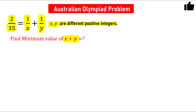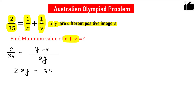How will you solve this problem? Generally these kinds of problems are solved by factorization, so let us use factorization here. We have 2/35 equal to (x+y)/(xy). Cross multiplying gives 2xy equals 35 times x plus y, or 2xy equals 35x plus 35y.